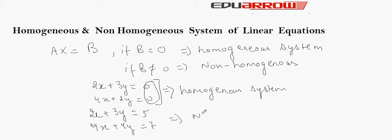This system of equations is non-homogeneous because B has a finite value. That is, B ≠ 0.